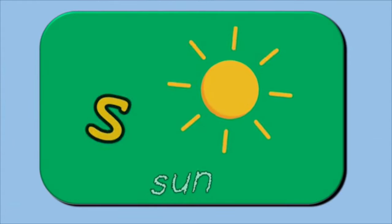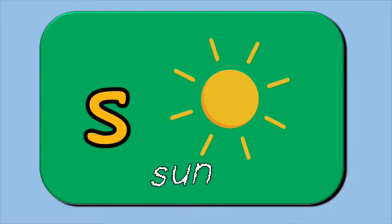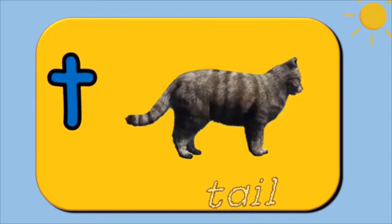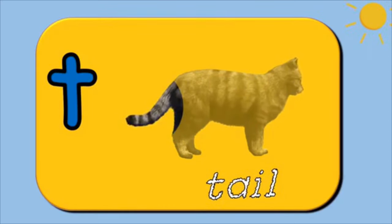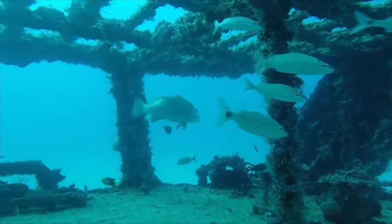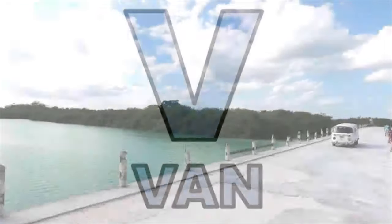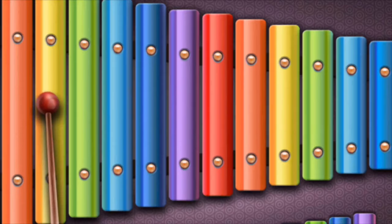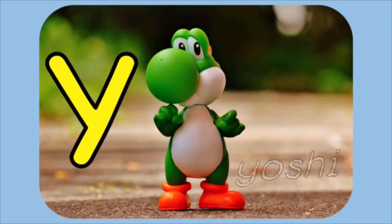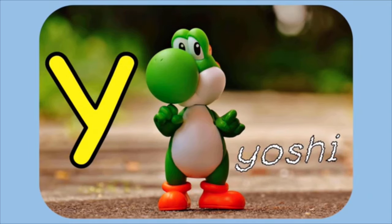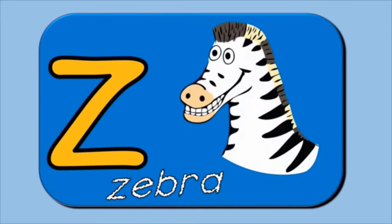S is for Sun. T is for Tail. U is for Under. V is for Van. W is for Water. X is for Xylophone. Y is for Yoshi. Z is for Zebra.